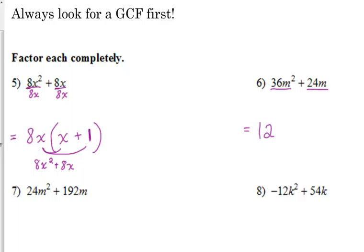All right? Let's look at number 6. 36 and 24. What is the largest number that will divide evenly into both 36 and 24? 12. Yes. I almost said 6, but 12 is bigger. You are correct. So 12 is part of our GCF. We've got m squared and m just like the one that we just had. So m is the other part of our GCF. So when we simplify, or when we take out our GCF, we're left with 3m plus 2.